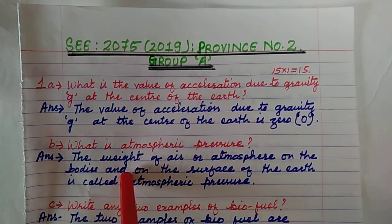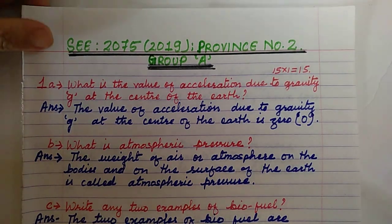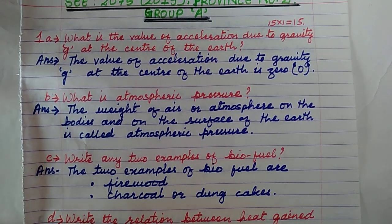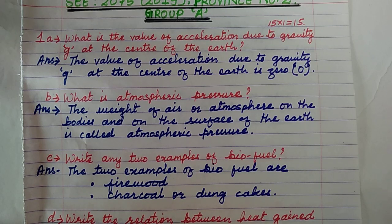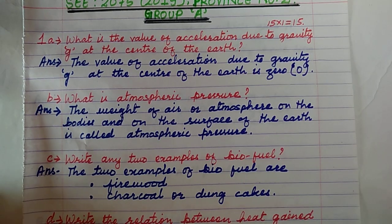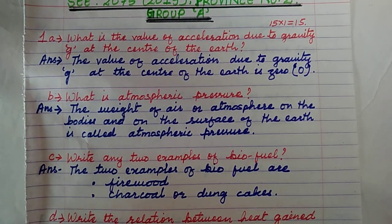Question number 1B: What is atmospheric pressure? The weight of air or atmosphere on the bodies and on the surface of the earth is called atmospheric pressure. If it is standard atmospheric pressure, that is the pressure at sea level, which is equal to 760 millimeters of mercury column. But here the question is simply what is atmospheric pressure: the weight of air or atmosphere on the bodies or on the surface of the earth.